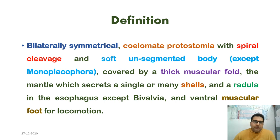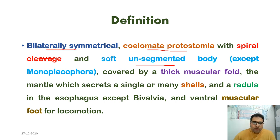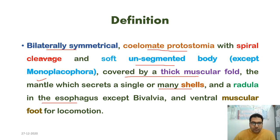Mollusks are bilaterally symmetrical, coelomate, protostomia with spiral cleavage and a soft unsegmented body. Except in the case of Monoplacophora, the body is covered by a thick muscular fold — the mantle — which secretes the single or many shells, and has the radula in the esophagus except in Bivalvia, and a ventral muscular foot for locomotion.